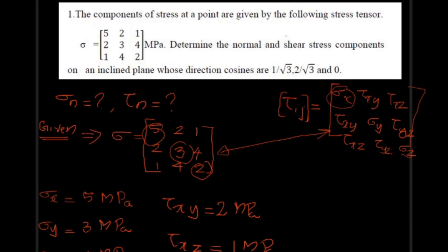The direction cosines are given. nx = cos α = 1/√3, ny = 2/√3, and nz = 0.